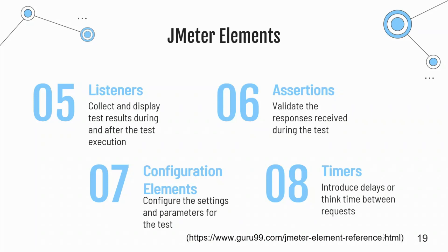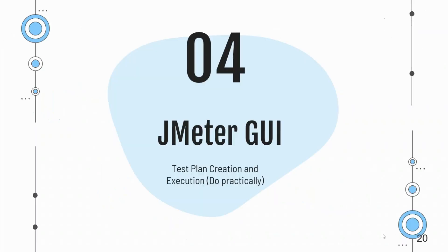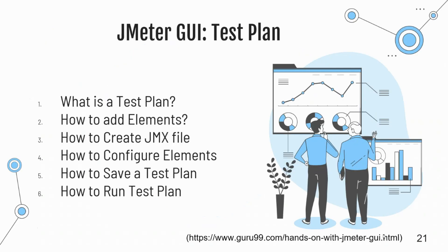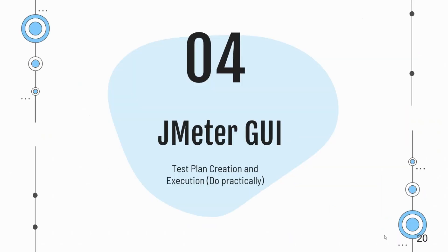Now let's look at the GUI mode of JMeter, where we will see how to create a test plan, how to add elements, how to create a JMX file, how to configure elements, how to save a test plan, and how to run a test plan. After that, we will practically perform a performance test on the UOH — University of Haripur — website and perform load testing to find the performance of this website.